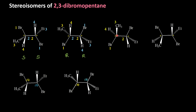For the third molecule, applying the CIP rule: on the first chiral carbon, hydrogen is away from the observer, so we retain the configuration. Moving from 1 to 2, 2 to 3 is counterclockwise, so the configuration is S. On the other chiral carbon, the fourth group is towards the observer, so we must reverse the configuration. Moving from 1 to 2, 2 to 3 is counterclockwise, so we reverse and write R.